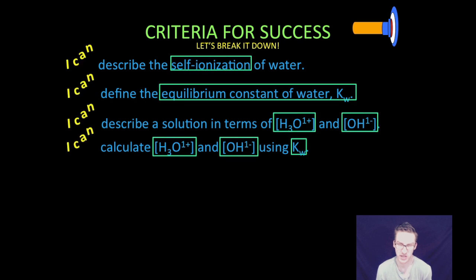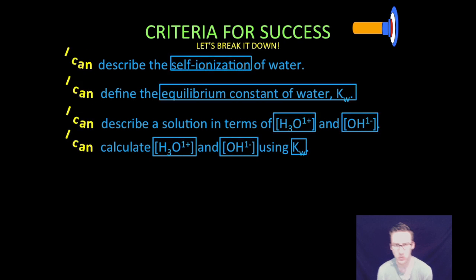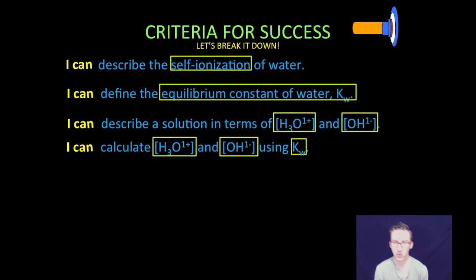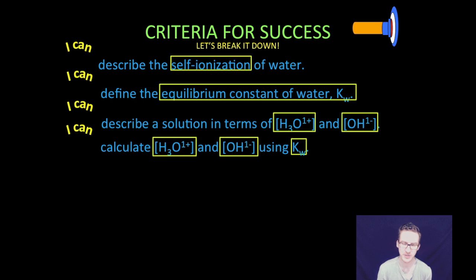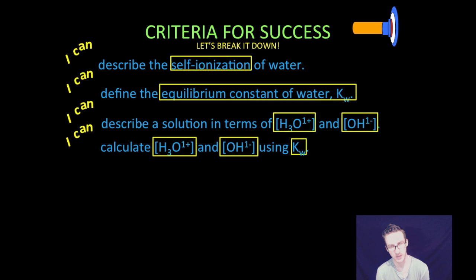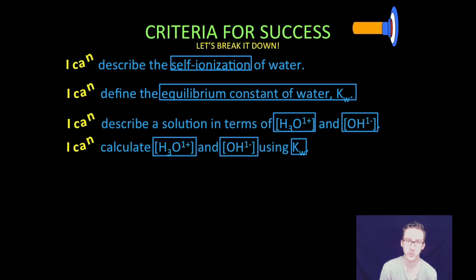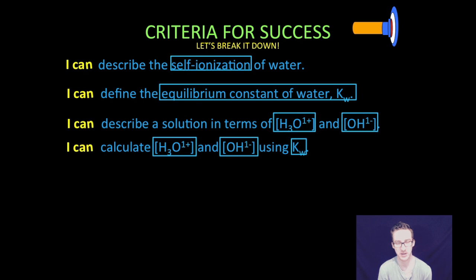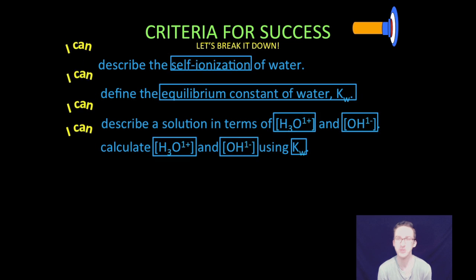What does it mean to self-ionize? We are going to describe the equilibrium constant of water known as Kw. We are going to describe a solution in terms of hydronium ion concentration and hydroxide ion concentration. And then we are going to calculate hydronium ion concentration and hydroxide ion concentration using Kw.